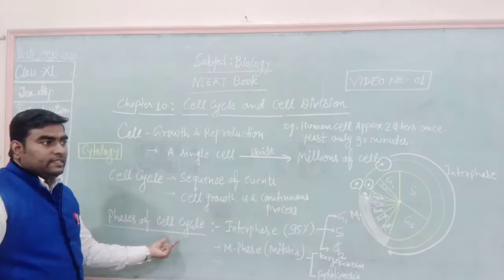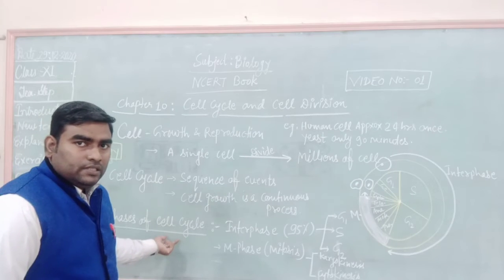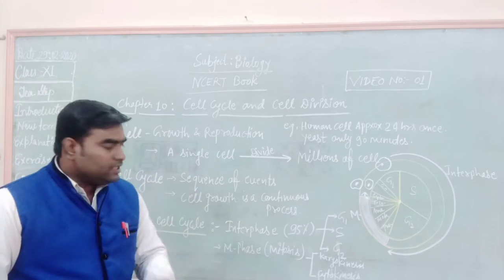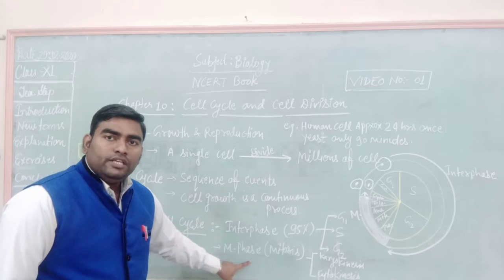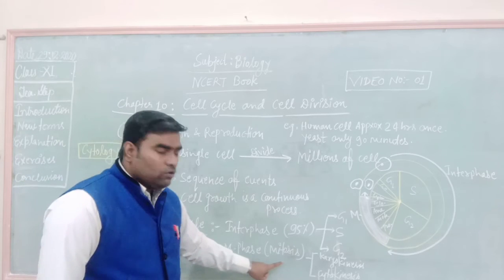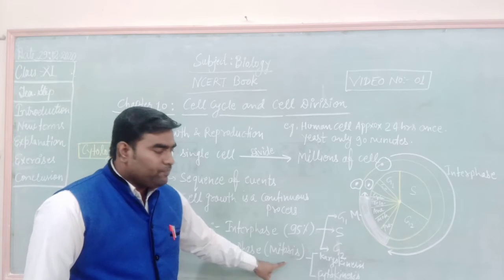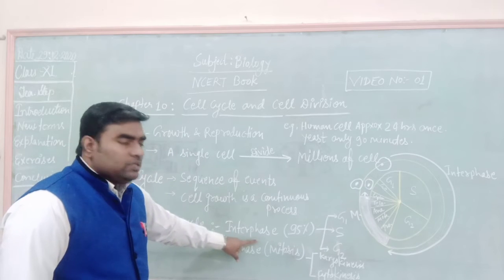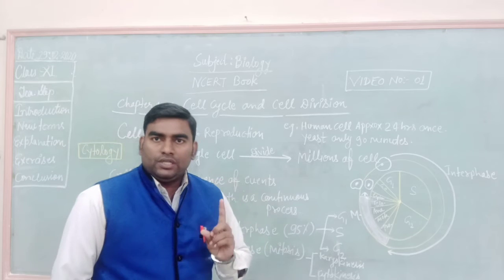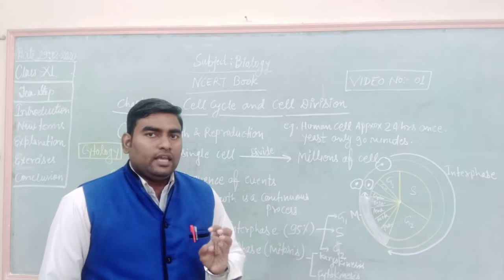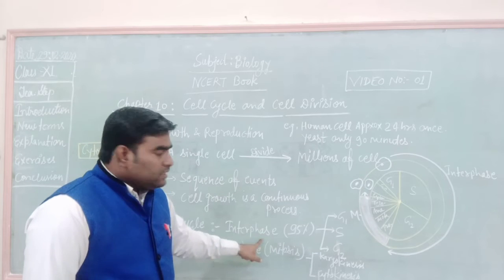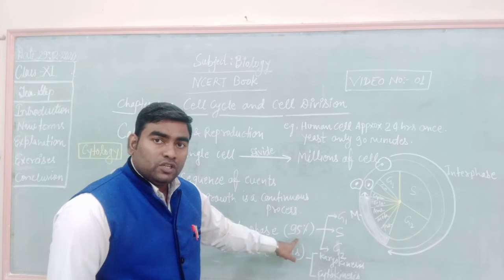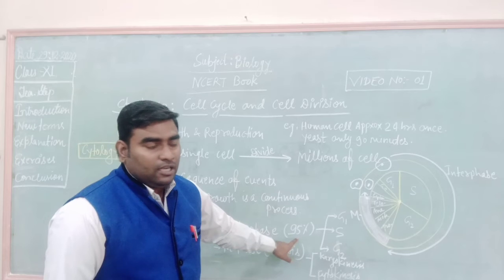Now, the phases of cell cycle. Students, there are two phases. First one is the interphase and second one is the M phase. M phase is also known as mitosis phase. In interphase, we will discuss about three phases: G1, S, and G2 phase. Interphase is approximately 95% of the total cell cycle period.